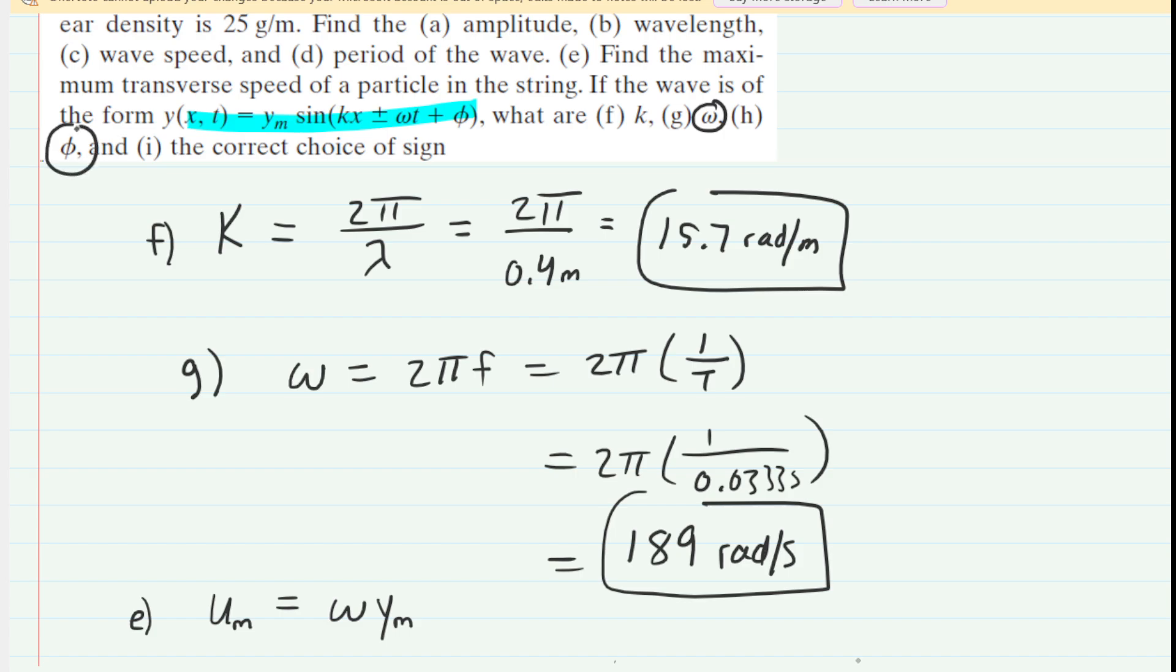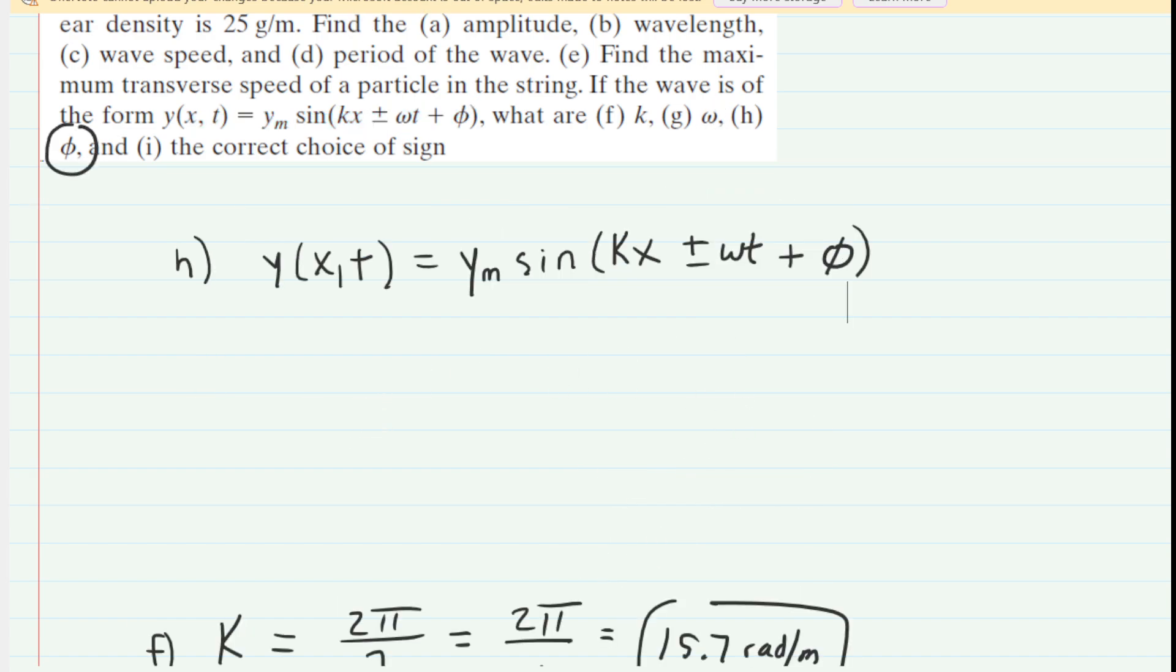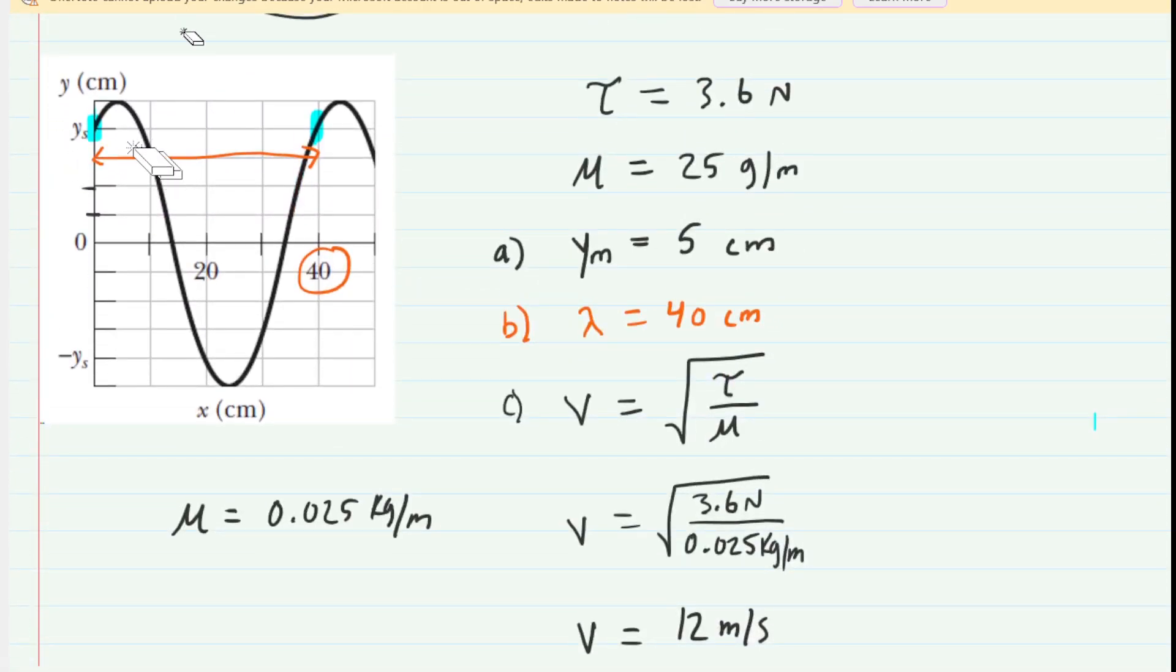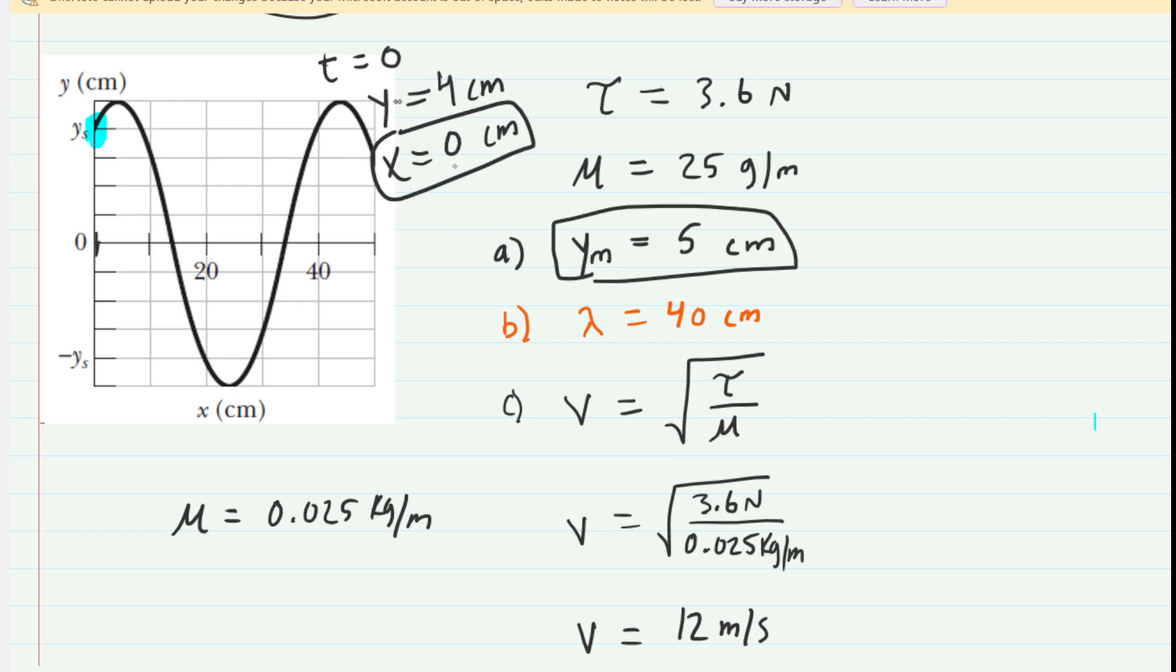In H, we need the so-called phase angle. And to do that, we're going to be using the wave equation given in the question. Now, in order to use that effectively, we want to go back to the graph, which has somehow gotten pushed down here. There it is. And what we're going to do is we're going to look at the initial point right there. Now, at that point there, we know that the time would equal 0. And then the value of y would equal that y sub s value, which you may recall was 4 centimeters. And also looking at that point, we can see that the x value is also equal to 0 centimeters. In addition, we know the amplitude y sub m is 5 centimeters. So we're going to take this value for the amplitude, this value for x, and this value for y, and plug them in to the wave equation above.